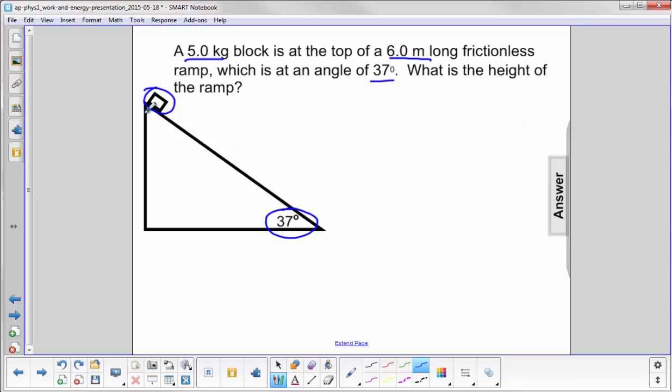So we're looking for this distance here, the height of the ramp, and we know this distance here, d. This is from the top of the incline to the bottom.